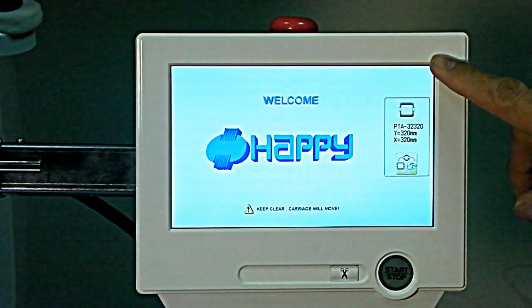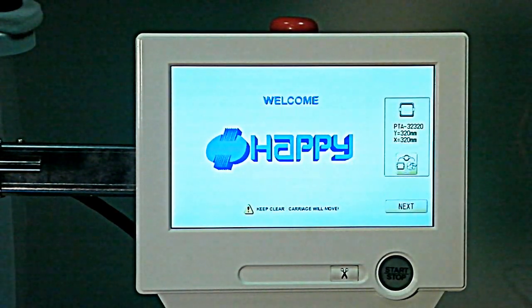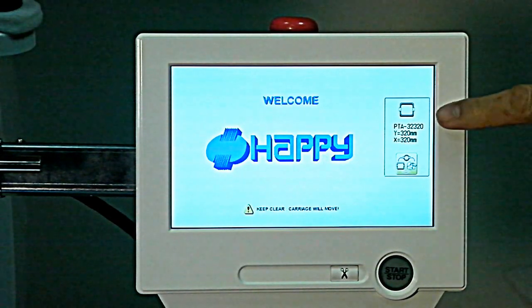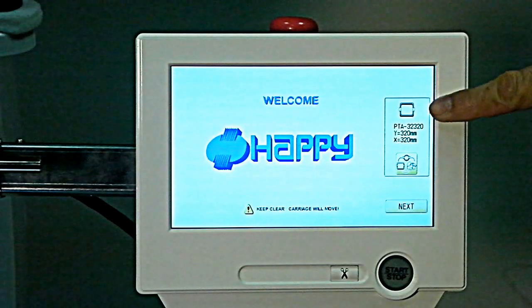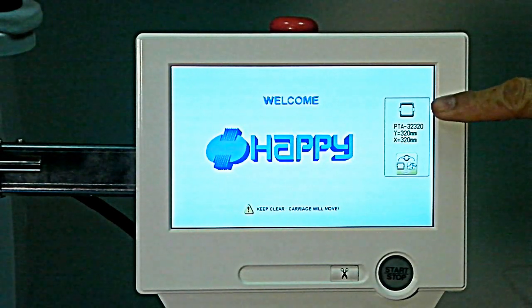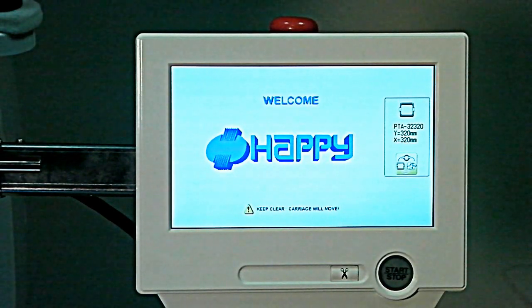The machine is also trying to always inform you of what's going on no matter what screen you're on. As an example here, it's showing you that it's got a 32 centimeter hoop and we can change that on the fly as we need to for different projects.